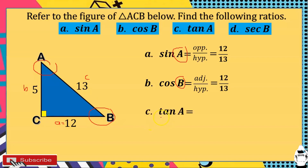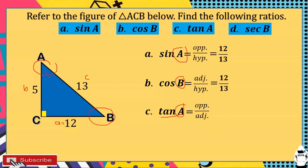Next, tangent A. The reference angle is again angle A. Tangent is opposite over adjacent — that's the TOA. Since the reference angle is A, the opposite side is 12 and the adjacent side is 5. So tangent A is equal to 12 over 5.